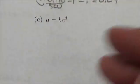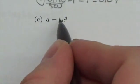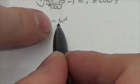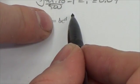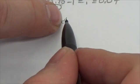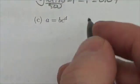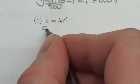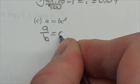You have to isolate the power. So the first thing we have to do is get rid of that coefficient there. This is not BC to the D. This is just C to the D multiplied by B. So I've got to move that B over. So this becomes a over b equals c to the d.